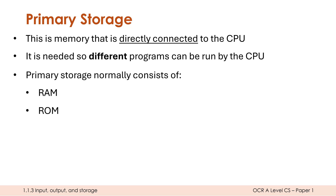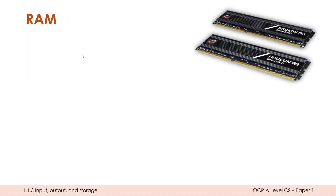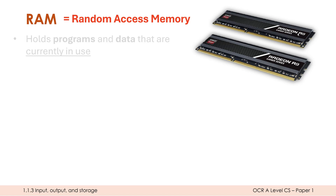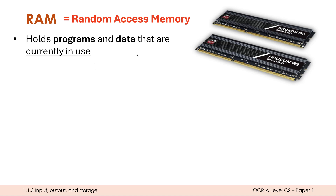Primary storage typically consists of both RAM and ROM, which are two different components. RAM we've talked about because it's what the CPU interacts with most often. RAM stands for random access memory. In a desktop PC it looks like this — we've got two sticks of RAM here which slot into the motherboard. The purpose of RAM is to hold programs and data that are currently in use, or at least currently open. A program is just a set of instructions, so both instructions and data are held in RAM.